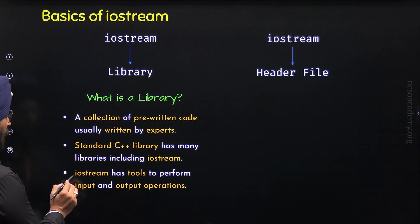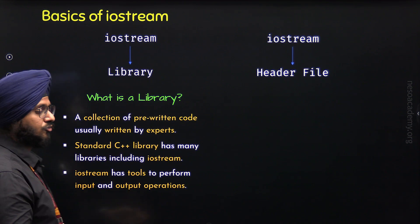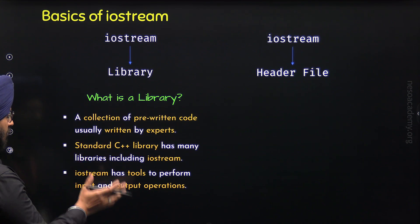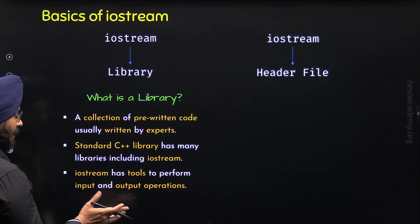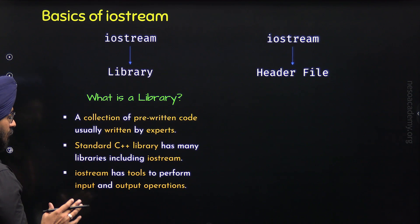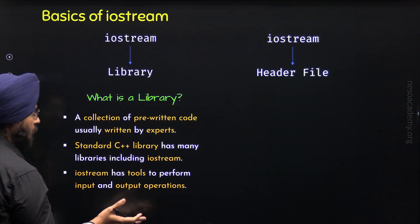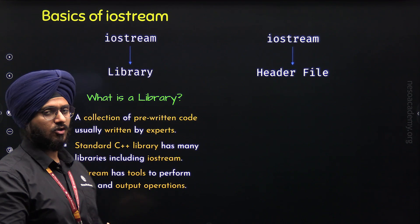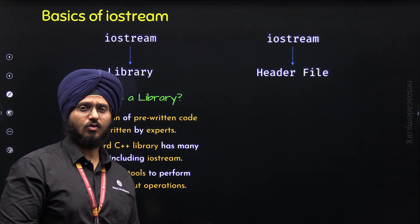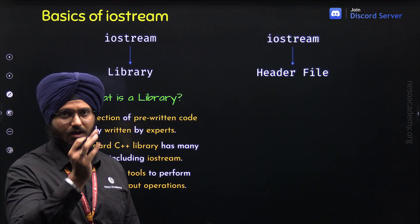Here, 'I' stands for input and 'stream' means a sequence of characters to read or write. So with the help of Iostream, we can use tools that allow us to read or write characters. This is the meaning of the Iostream library — it is the collection of input and output tools which we can use in our code. One such tool is std::cout, and another is std::cin. We have other tools available as well in this Iostream library.